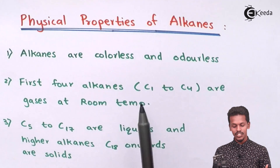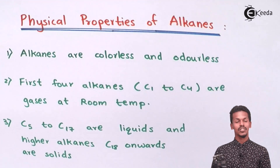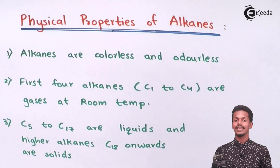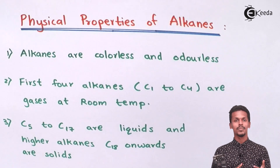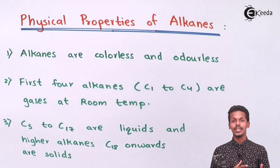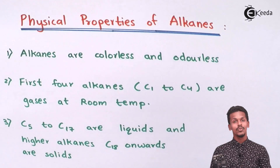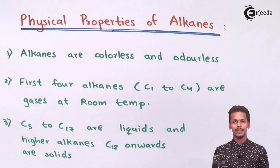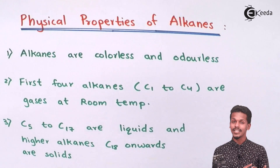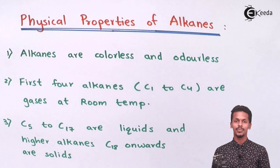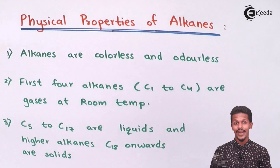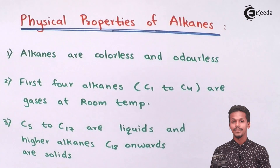Methane is the first member of the alkane series, consisting of only one carbon atom. Methane is used in LPG gas to produce energy so we can cook food. It is also used in CNG. So methane is widely used in our daily life.